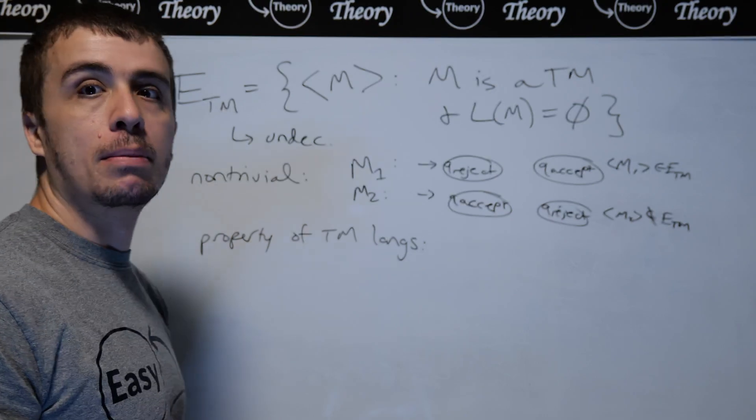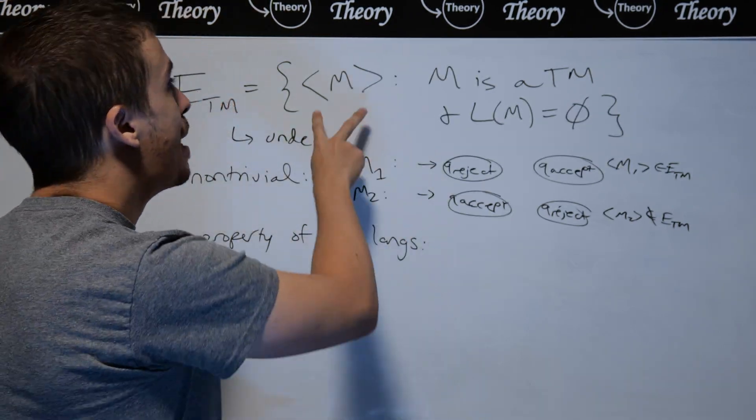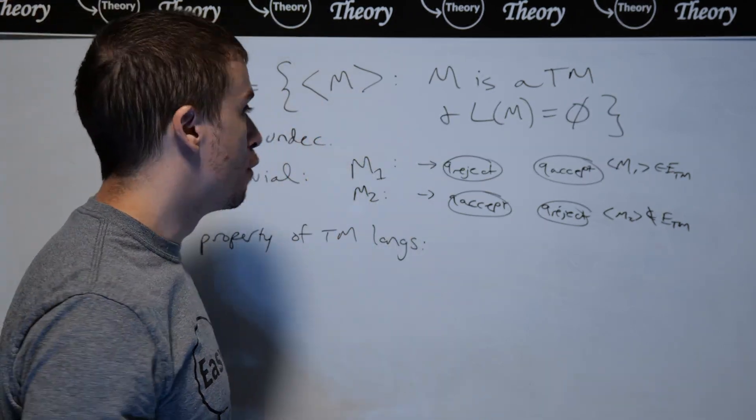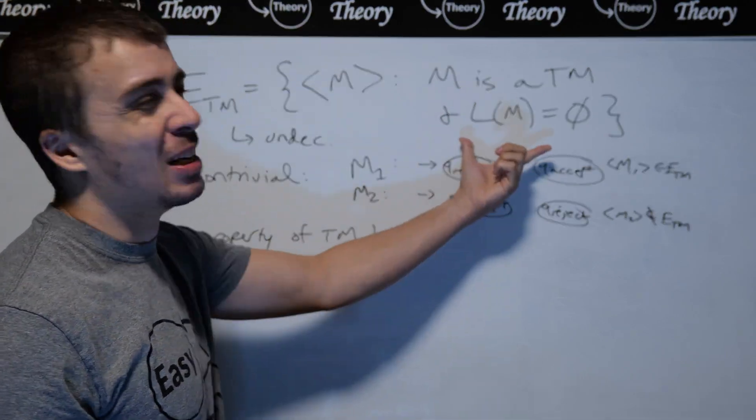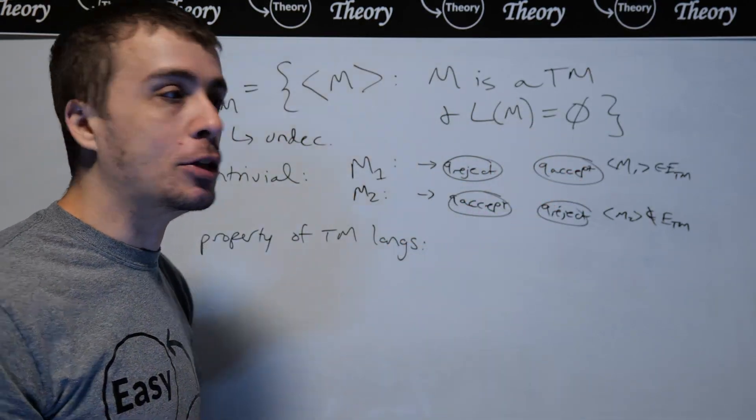Well, how do we show it's a property of Turing machine languages? Well, that means it's not based on the description itself. Namely, it's only based on the language. And it looks like that to be here, but we need to be sure.